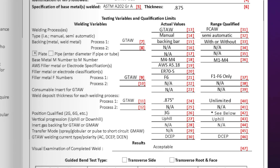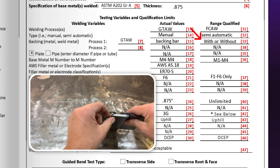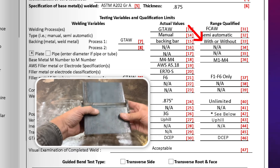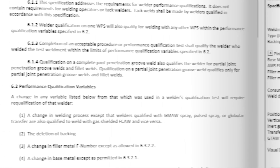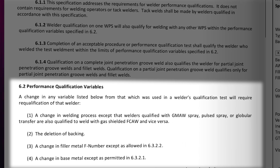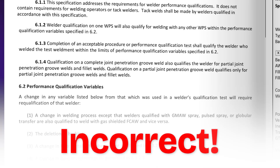Now let's get into the backing section on Line 15, where the actual values show the welder qualified with backing. Line 33 states he's qualified to weld with or without backing. But going back to Class 6's essential variables, specifically Note 2, it mentions a deletion of backing as a key change. Since he qualified with backing, removing it would be outside the scope of his qualification — he's only qualified to weld with backing. Based on that, I'd mark this range as incorrect.